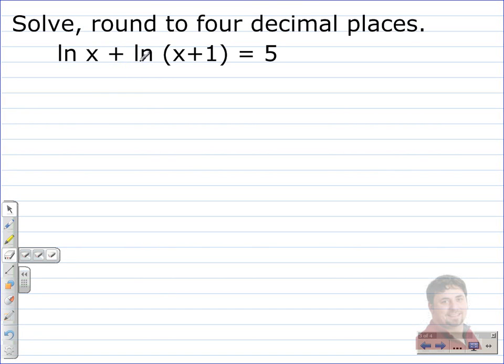When we see an addition sign between two natural logs, we know it's going to be written as a product of the two logs. That means we're going to take x and multiply it by x plus 1, and we'll bring down the rest of the equation. What we just did was use the product rule or the product property of logarithms or in this case natural logs to go from the first line to the second line.